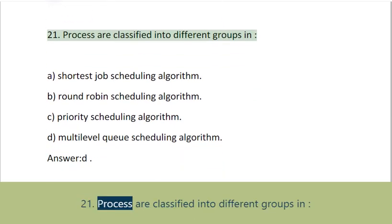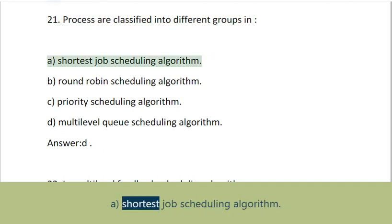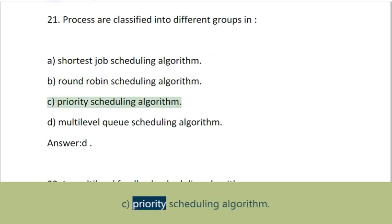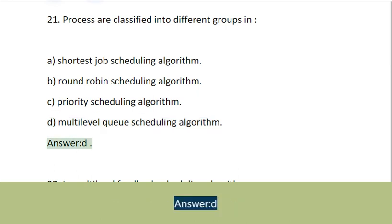Question 21: Process are classified into different groups in: A. Shortest job scheduling algorithm, B. Round robin scheduling algorithm, C. Priority scheduling algorithm, D. Multi-level queue scheduling algorithm. Answer: D.